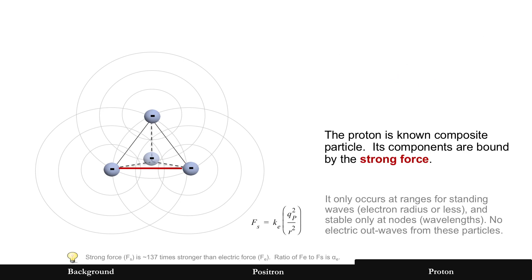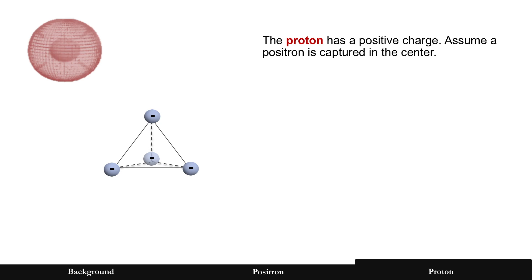Now that is a proton because a proton is known as a composite particle, meaning that there's two or more particles at least within the proton. And its components are bound by the strong force. You can see that as the red line that I have just drawn and the equation there for the strong force. If you actually follow the math from earlier into the equations, you'll see that it is 137 times stronger than the electric force, which is the fine structure constant. But this only occurs, that force only occurs when it can reach within those standing wave radius, which means it is quite short. It only occurs at nodes, standing wave nodes, and furthermore, choosing so much energy now that those particles actually are not reflecting out-waves, and therefore there's no electric force to be detected from these particles.